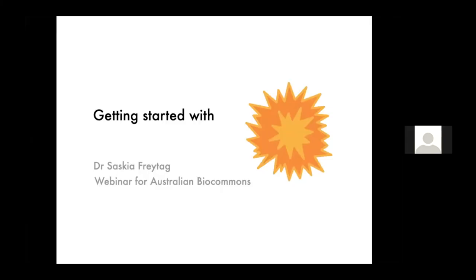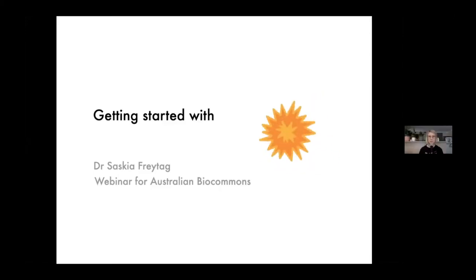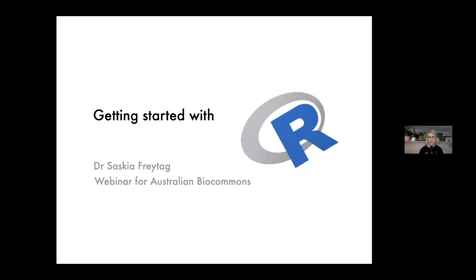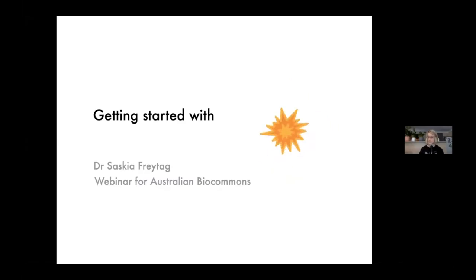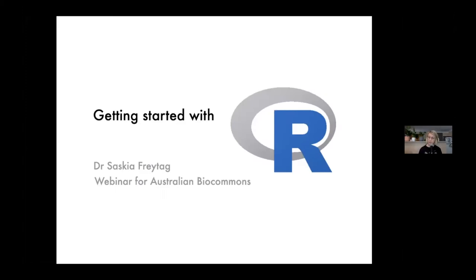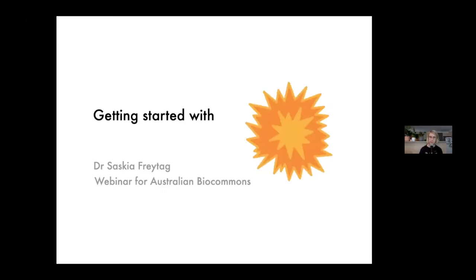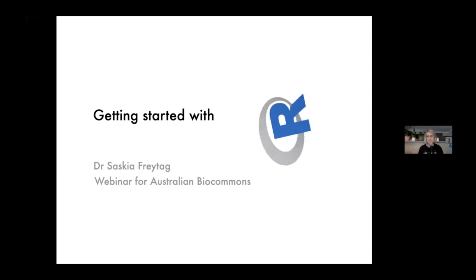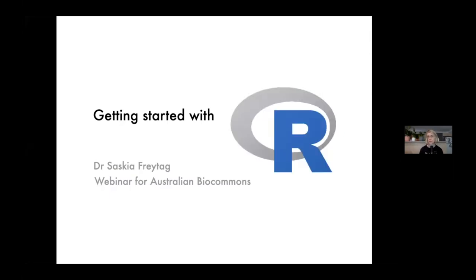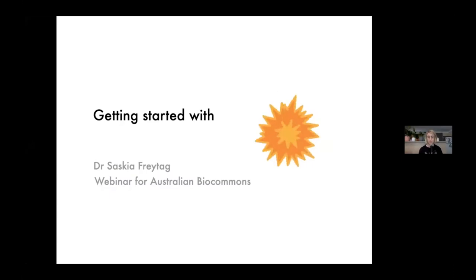Thank you. So I'm going to talk to you about getting started with R today. First of all, what is R? On their website it says R is a free software for statistical computing and graphics. Wikipedia is a little more elaborate, describing R as a programming language and free software environment for statistical computing and graphics. So now we know it has something to do with programming, graphics, and statistics, but it doesn't really tell you what R can do or how you might want to use it.